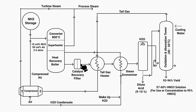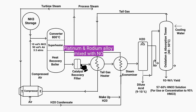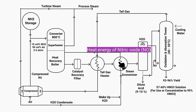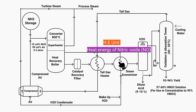The catalyst recovery filter recovers and removes catalyst from the gas. Since the velocity of nitric oxide gas exiting the reactor is high, platinum and rhodium alloy particles become mixed with the gas. Because this catalyst is very expensive and could react further inside the tower and spoil the process, the catalyst recovery filter is used. Heat exchanger units then transfer the heat energy of the nitric oxide gas — to the tail gas via the tail gas heater, and to the condensate water via the steam economizer — reducing the temperature of the gas before it enters the tower.